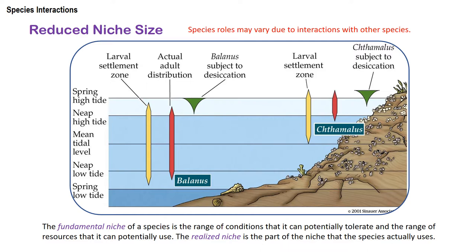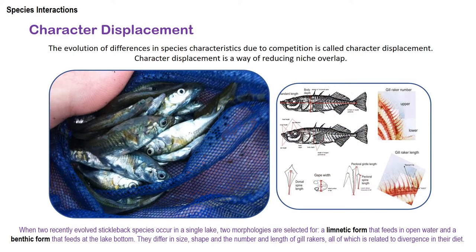A species' niche is the role of a species in a particular environment or habitat, but this role may vary due to interactions with other species. Ecologists differentiate between the fundamental niche — the broad range of conditions a species can potentially use — and the realized niche, which is the part of that broader niche that the species actually uses, limited by predation and competition. Natural selection favors differences between competitors especially where niches overlap. This evolution of differences in characteristics due to competition is called character displacement — a way of reducing niche overlap.